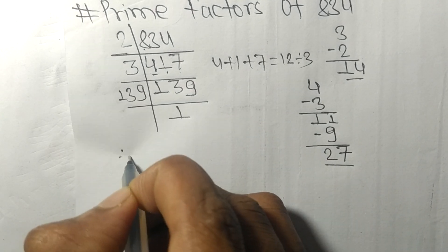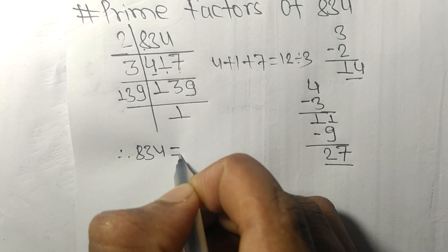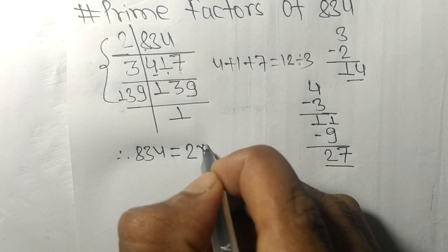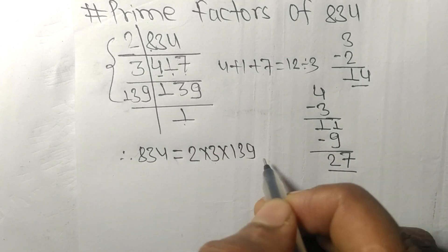Therefore, 834 is equal to 2 times 3 times 139.